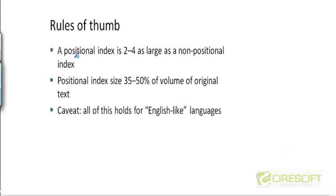As a rule of thumb, by adding positional information to an index, you are going to make the index about two to four times larger. These are empirical rules of thumb observed from indexes that are built in practice. If you build a non-positional index on a corpus and then you build a positional index, the latter index is going to be about two to four times larger. And the size of the positional index in terms of disk space will be about one third to half of the size of the corpus, the original corpus of documents from which you are building the index.